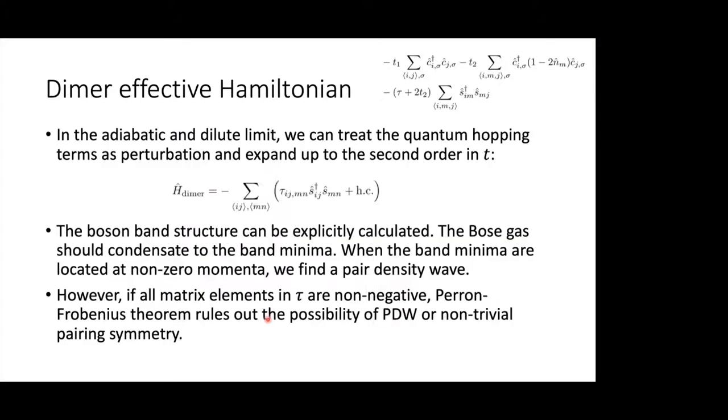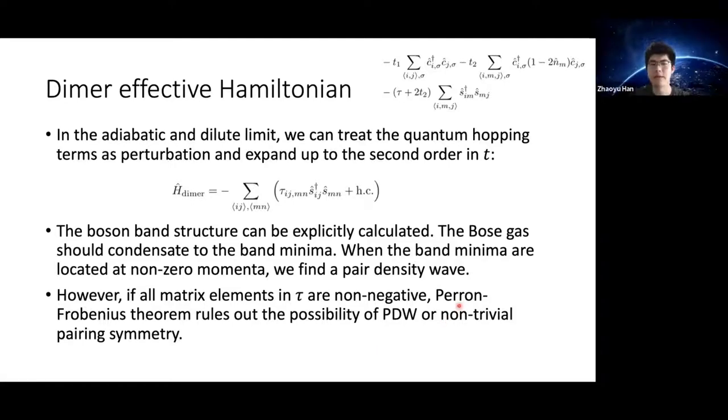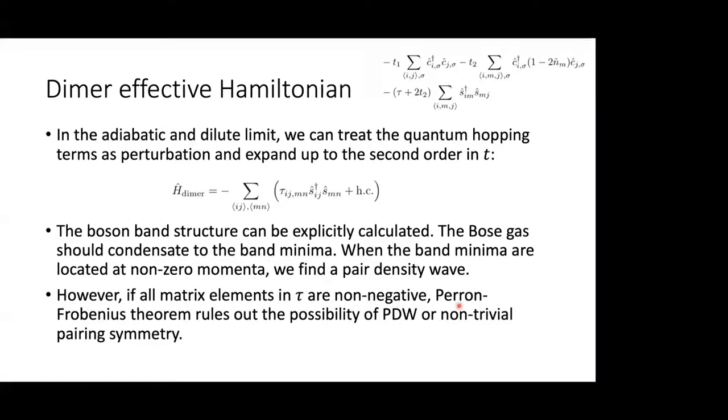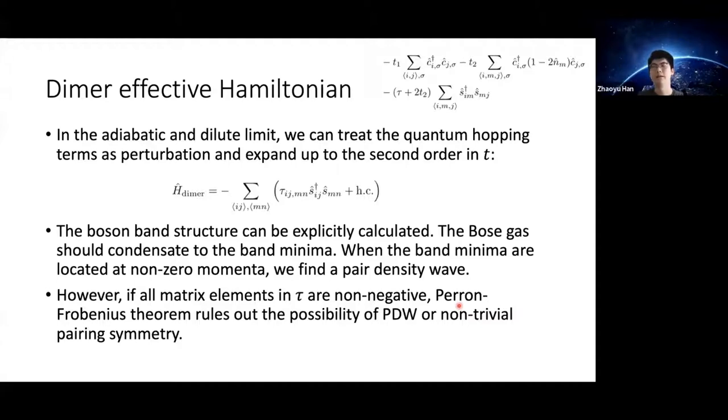Sorry, what does this theorem mean? Can you give us a sense of what that's about? The Perron-Frobenius theorem is a theorem in linear algebra. It states that if all the matrix elements of a matrix are non-negative, then the eigenstate with the largest eigenvalue should have all positive and real components. So this rules out the possibility of pair density wave which will oscillate, or any other non-trivial pairing symmetry like d-wave. We can only have s-wave.